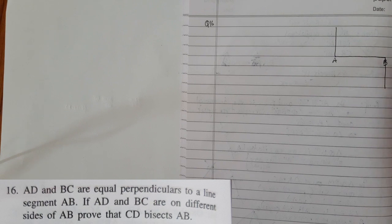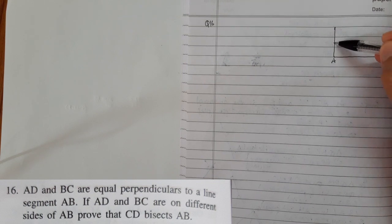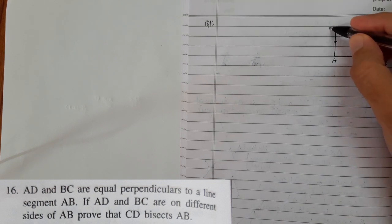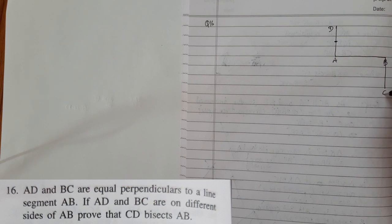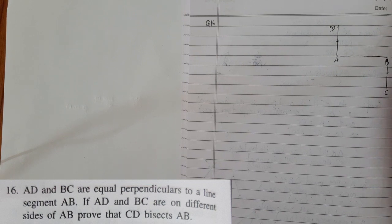As they have said, again reading, AD and BC are equal perpendicular. That means if this is three storey long, AD and BC is also three storey long. They are equal. Hopefully this thing is clear.